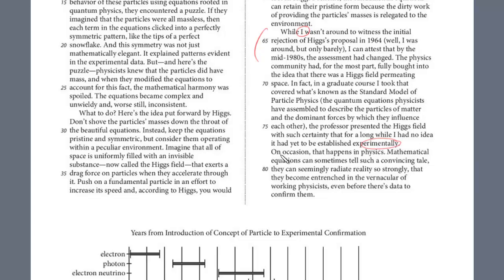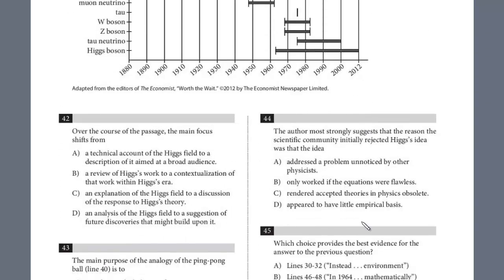The professor presented the Higgs field with such certainty for a long while, I had no idea it had yet to be established experimentally. And so he's given this personal example, this anecdote. The professor presented it, and he had no idea it had yet to be established. Then the final sentence here, on occasion that happens in physics, mathematical equations can sometimes tell such a convincing tale, they can seemingly radiate reality so strongly that they become entrenched in the vernacular of working physicists, even before there's data to confirm them. And so this is sort of like an anomaly. This doesn't happen in science, usually you need the data to validate the theory and then it's accepted. Here it was so powerful, it was actually accepted before, and he also uses a personal experience to relate that.